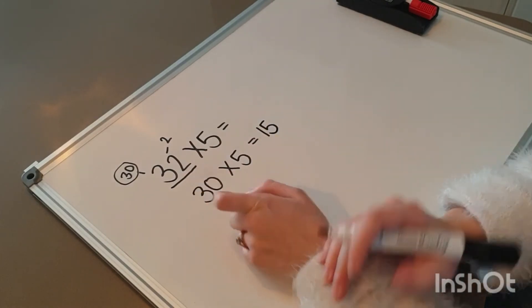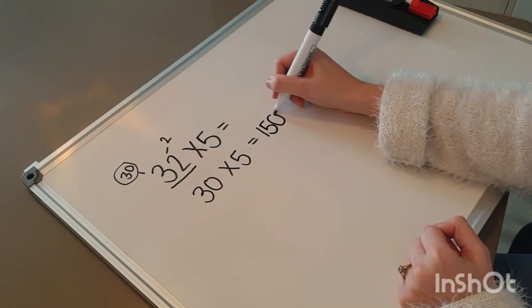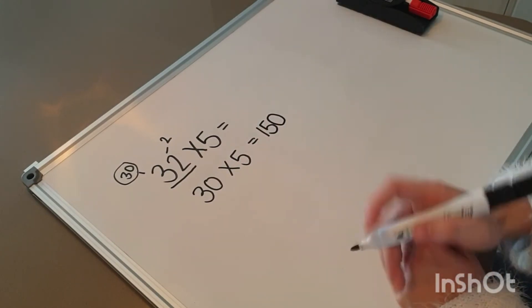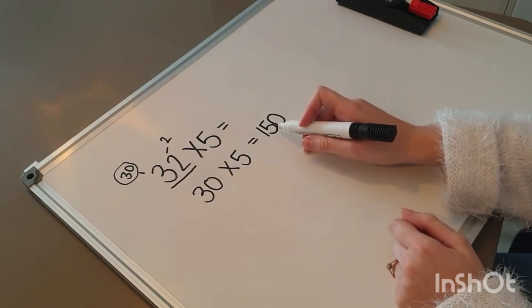But I can't forget to put my zero at the back, because it can't just disappear. So, 30 times 5 equals 150.